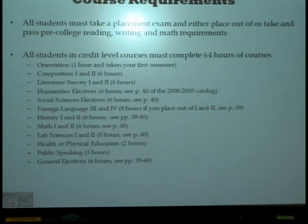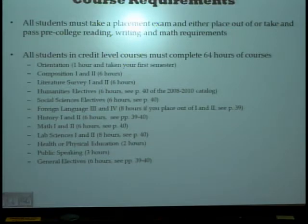You'll also be asked to take six hours of humanities electives. Those humanities may include things such as art, music, philosophy, and religion. The social sciences electives, also six hours, may include things such as psychology, sociology, or geography.